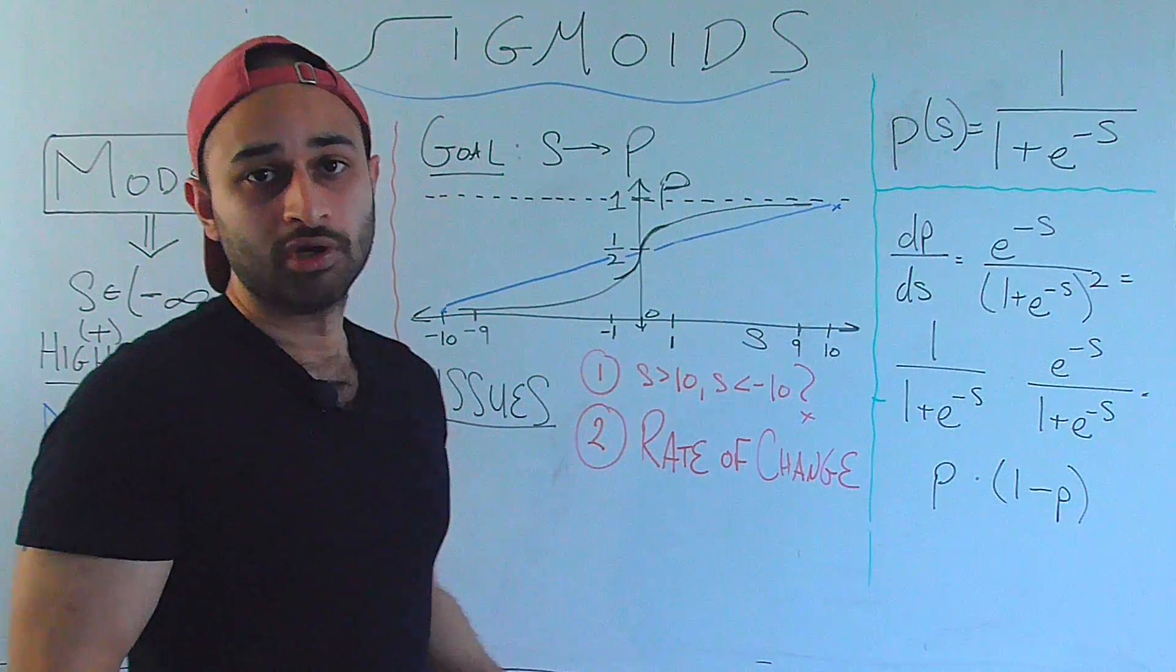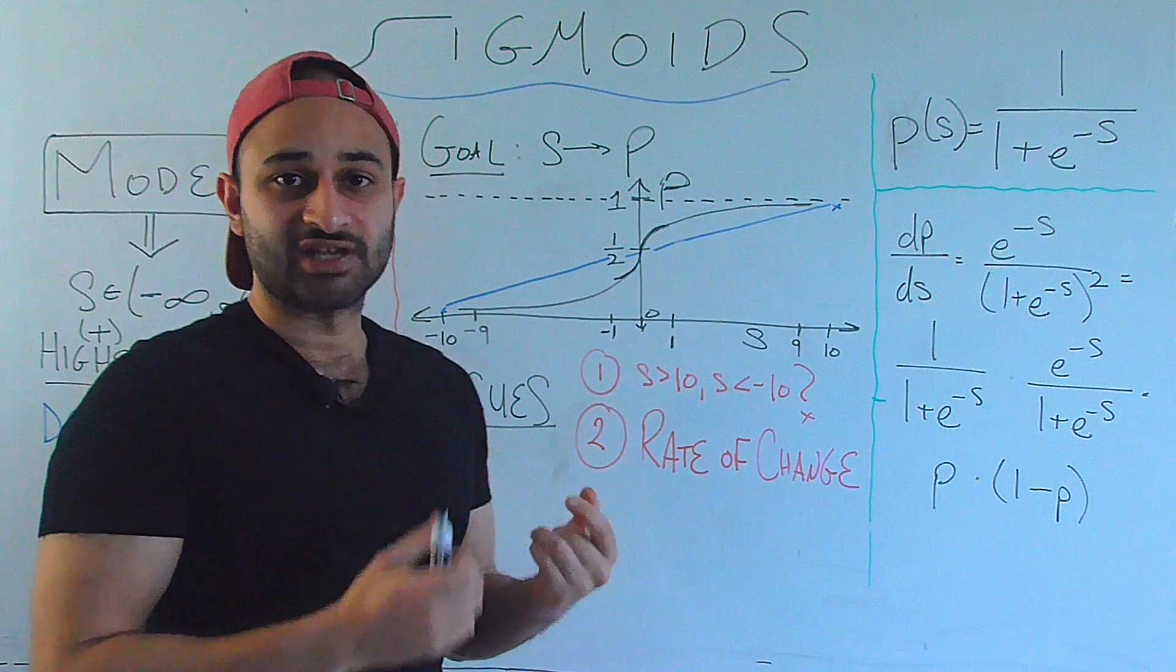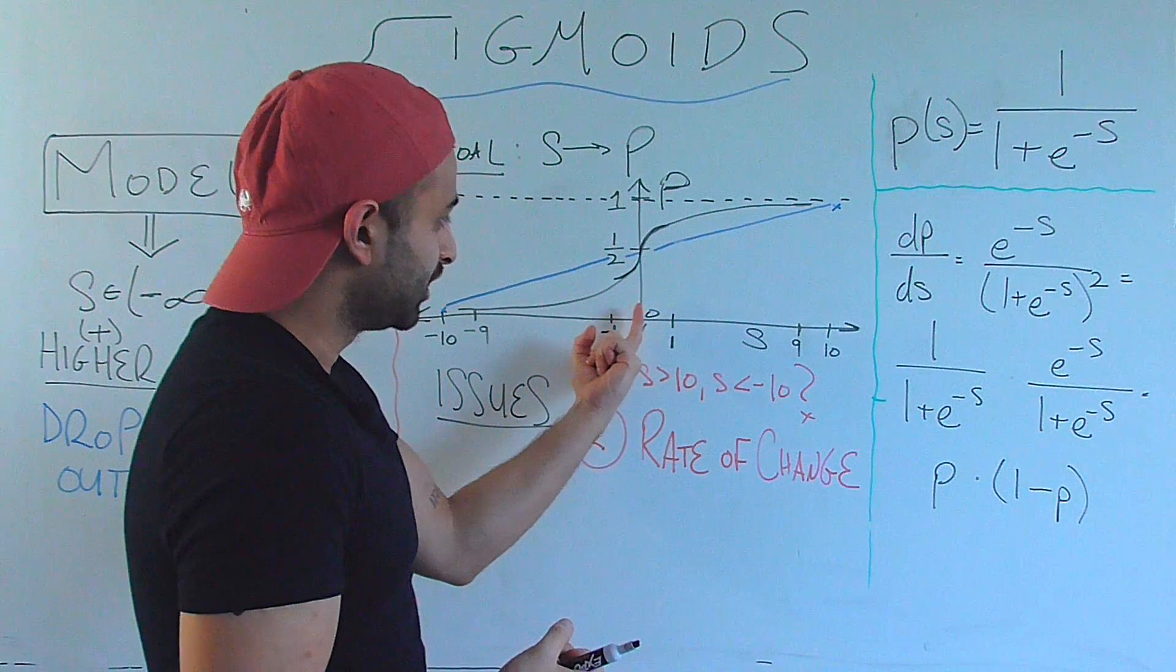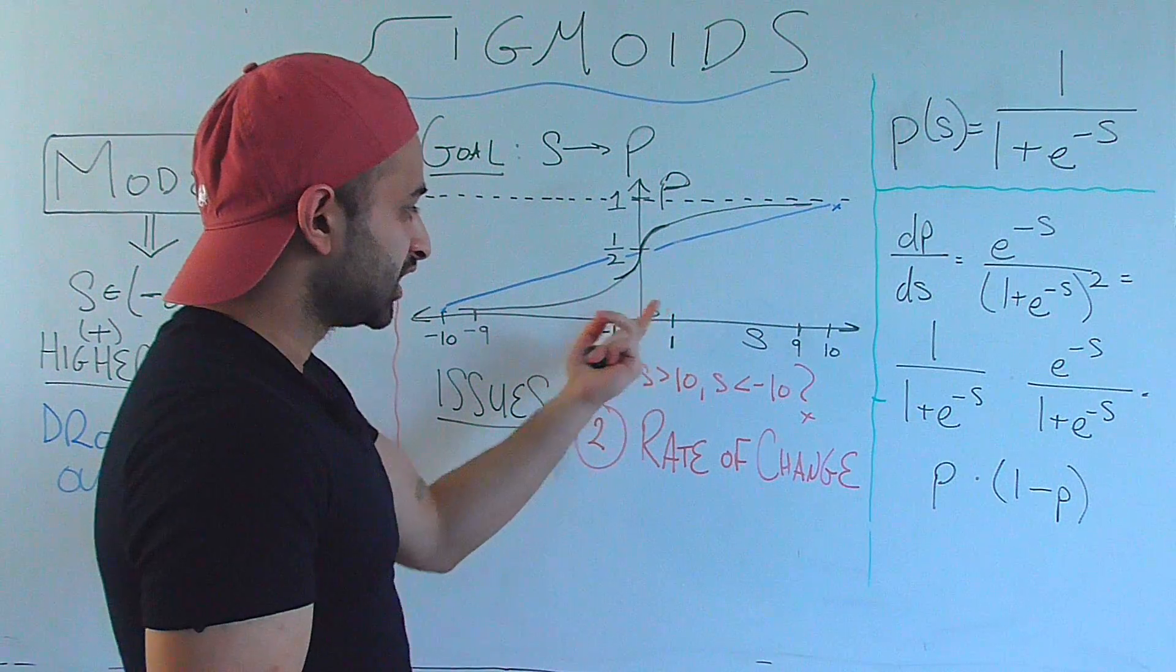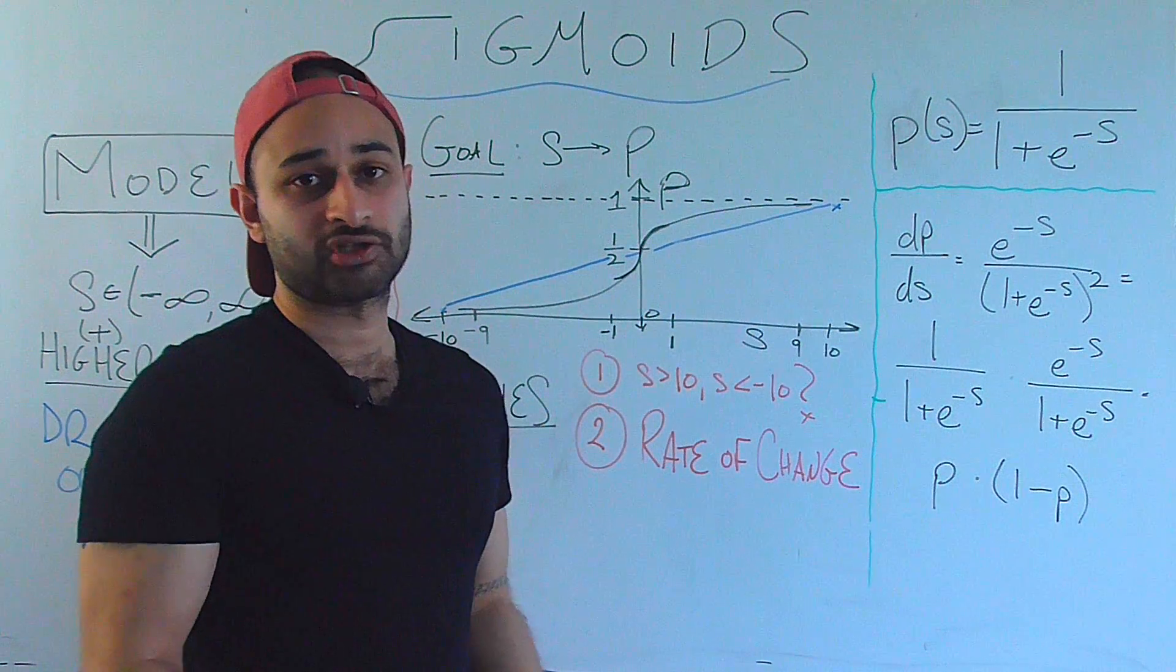So that solves problem number 1. And more importantly, it solves problem number 2, which is that it exactly captures this setup where if we have no information where the score would be equal to 0, let's say, then little changes in the score have big impacts on our probability.